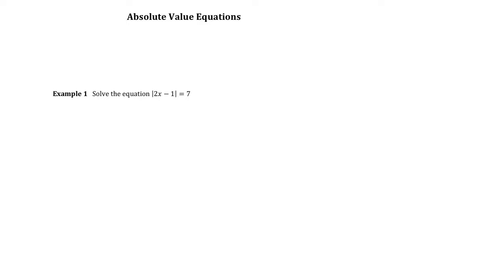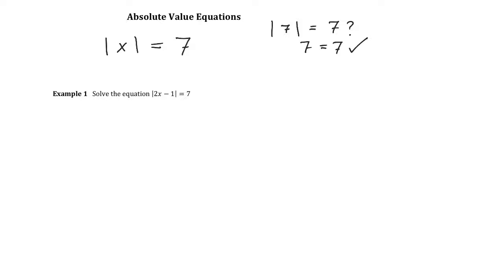To solve an absolute value equation, I want to start by looking at a very simple example: the absolute value of X equals 7. It's easy to think about the two numbers that make this true. The absolute value of 7 is 7. But there's a second solution — if you take negative 7, the absolute value makes that negative become positive, so it reduces to 7 equals 7 as well.